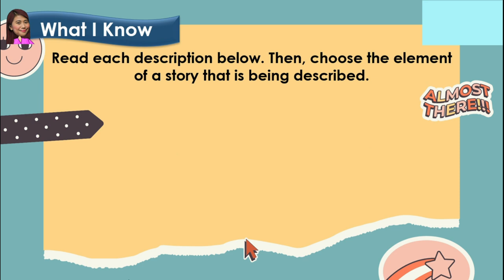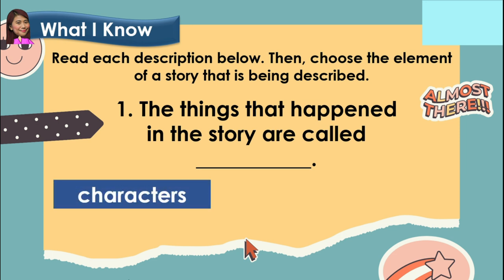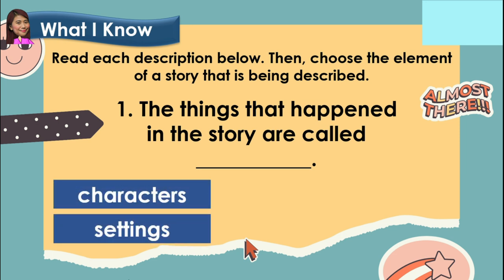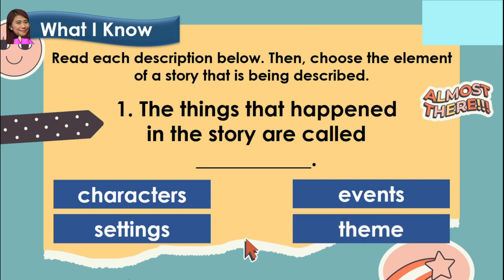Before we proceed to our lesson, let's try to answer this activity. Read each description below, then choose the element of a story that is being described. Number 1: the things that happened in the story are called blank. What do you think? Is it characters, settings, events, or theme? Type now your answer in the comment box.